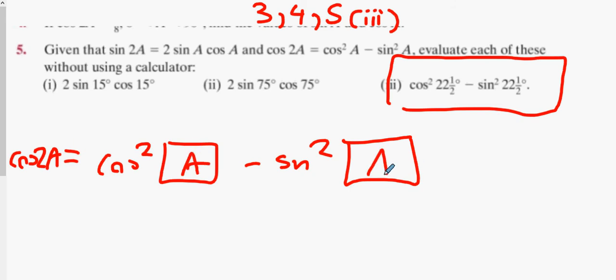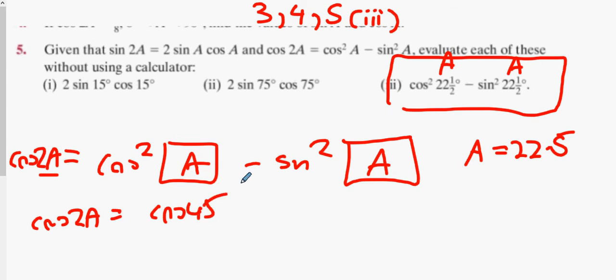And what can you say A is then? A is 22.5. So what's cos 2A going to be? What's 2 times 22.5? You go to your page 13 and you read from it and you get 1 over root 2. Once again, no way they can tell you if you use the calculator or not.